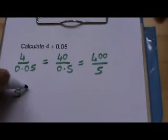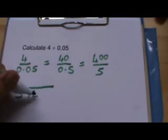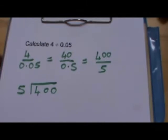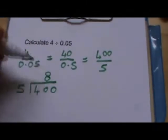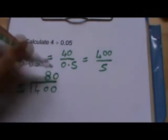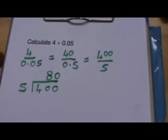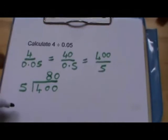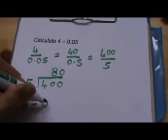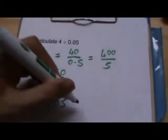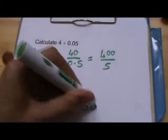So now we can do the division. 5s into 400. So 5s into 4 don't go. 5s into 40 go 8. 5s into 0 go 0. So we've found that 4 divided by 0.05 is 80.